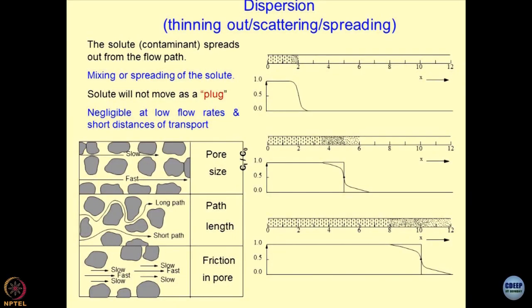Let us talk about the third mechanism of contaminant transport, which is dispersion. The literal meaning is getting dispersed — thinning out of something, spreading, scattering.